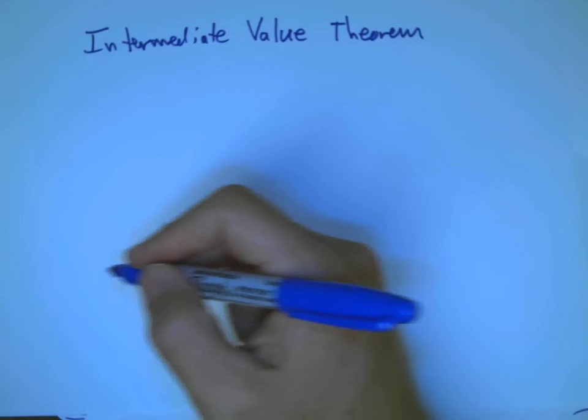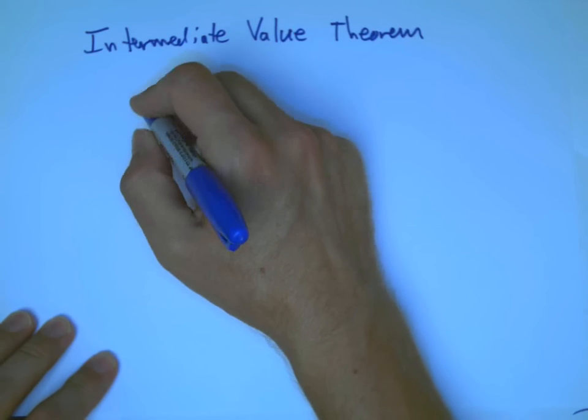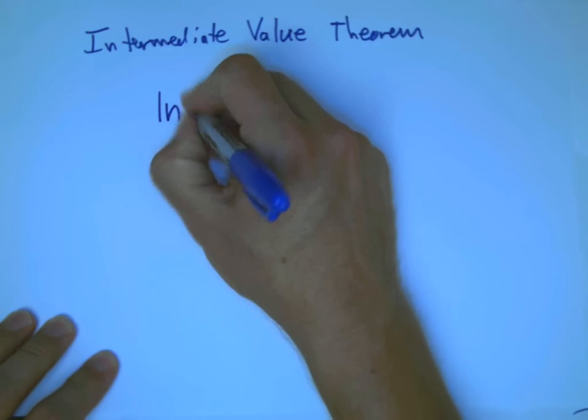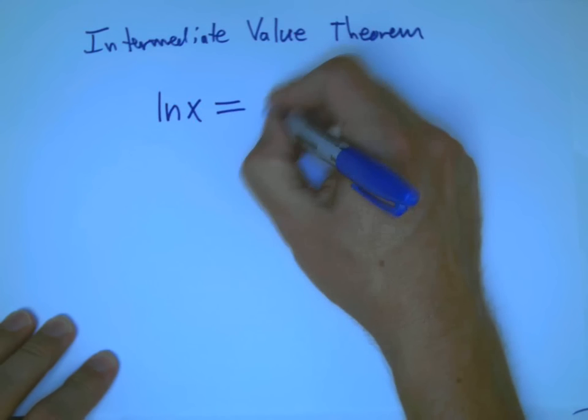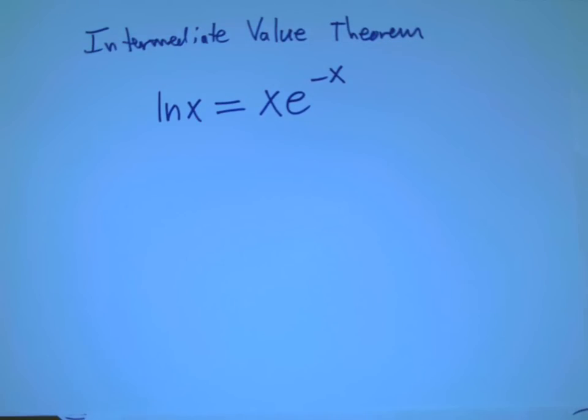One way to think about, one way where it's useful is solving equations, or thinking about equations. And I want to think about this equation: natural log of x equals x times e to the minus x. How would we go about trying to find a solution to that, an x that makes those two sides equal?